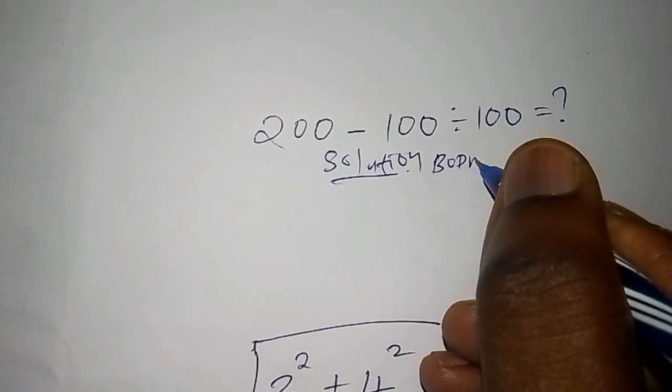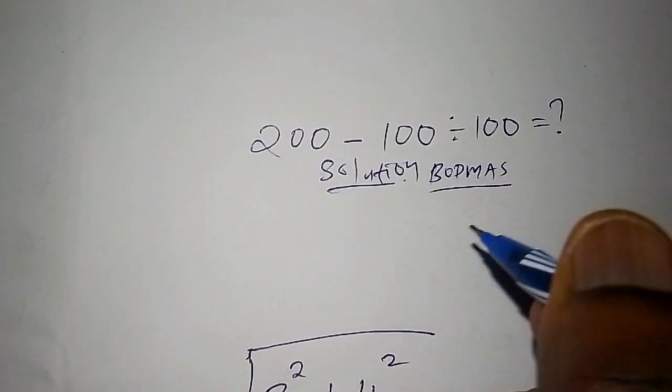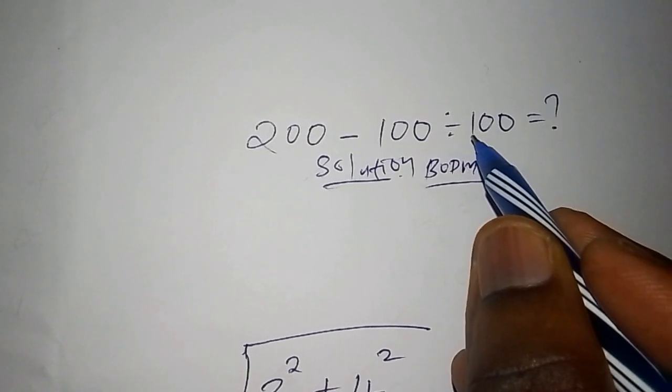We are going to work out with something called BODMAS. So this is how BODMAS works: we are going to start with the division sign, so we're going to work out the division first.